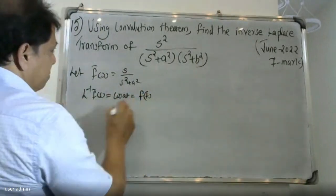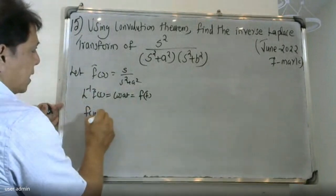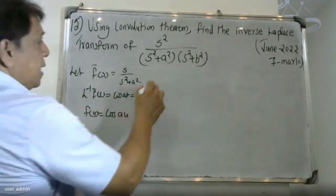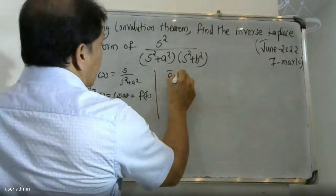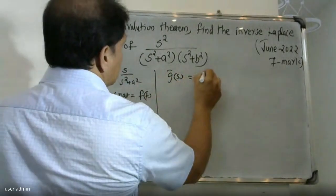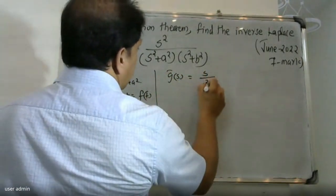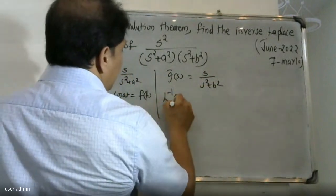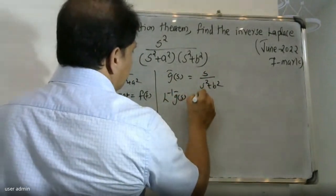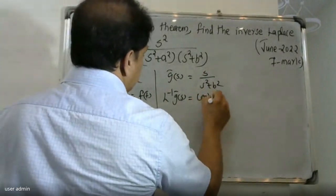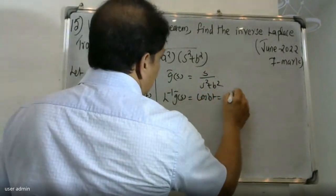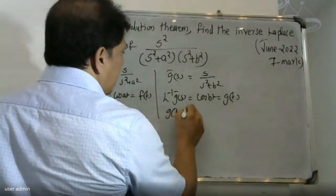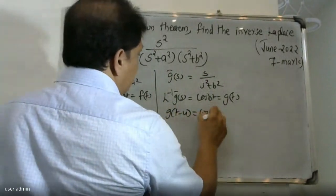Since L inverse of F̄(s) = cos(at), we take F(t) = cos(at). Similarly, Ḡ(s) = s / (s² + b²), so L inverse of Ḡ(s) = cos(bt). Therefore g(t) = cos(bt) and g(t − u) = cos(b(t − u)).